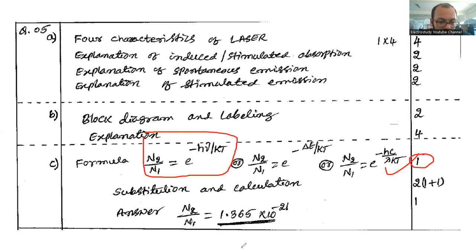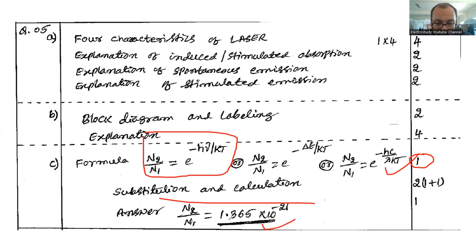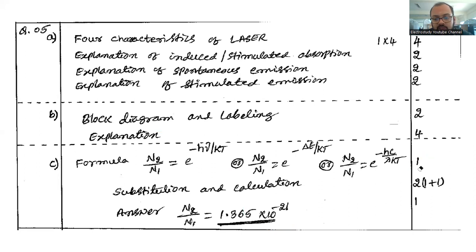Writing the formula earns 1 mark. Substitution and computation earns 2 marks. The result, 1.365 × 10^(−2), is the ratio and earns the final mark. Kindly verify this answer before going for the examination. Similar kinds of questions can be expected in the forthcoming examination.